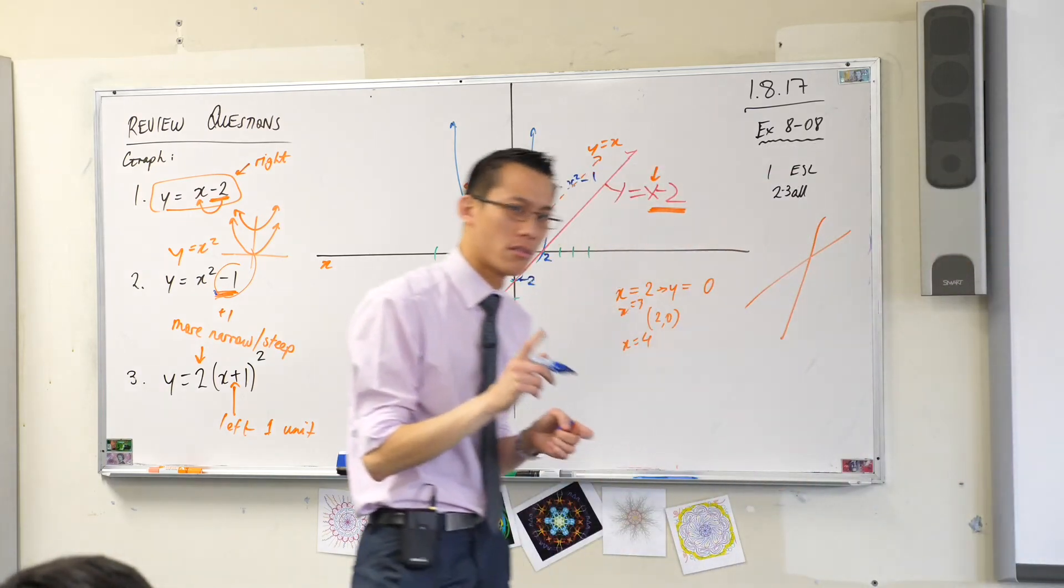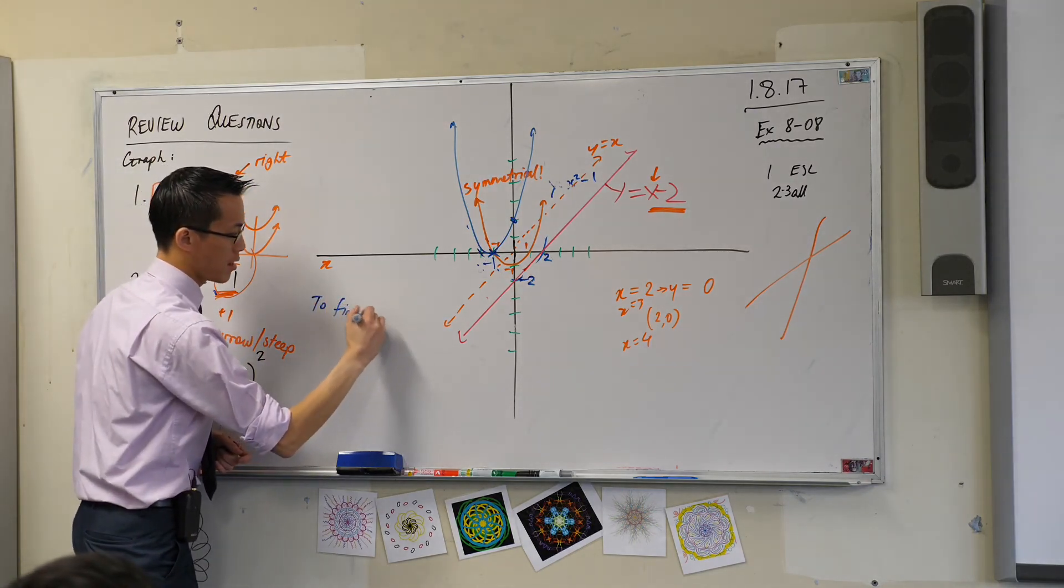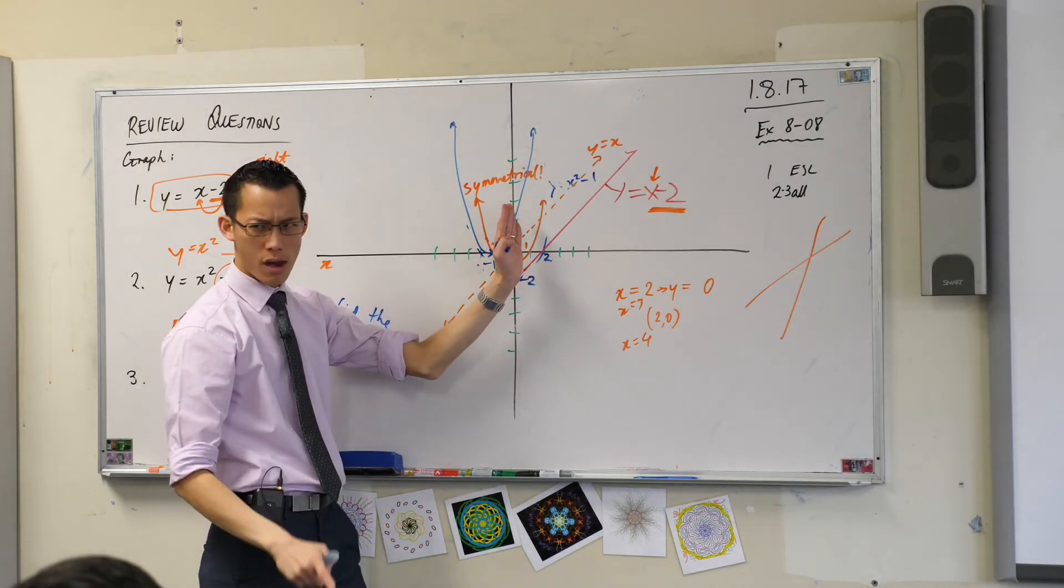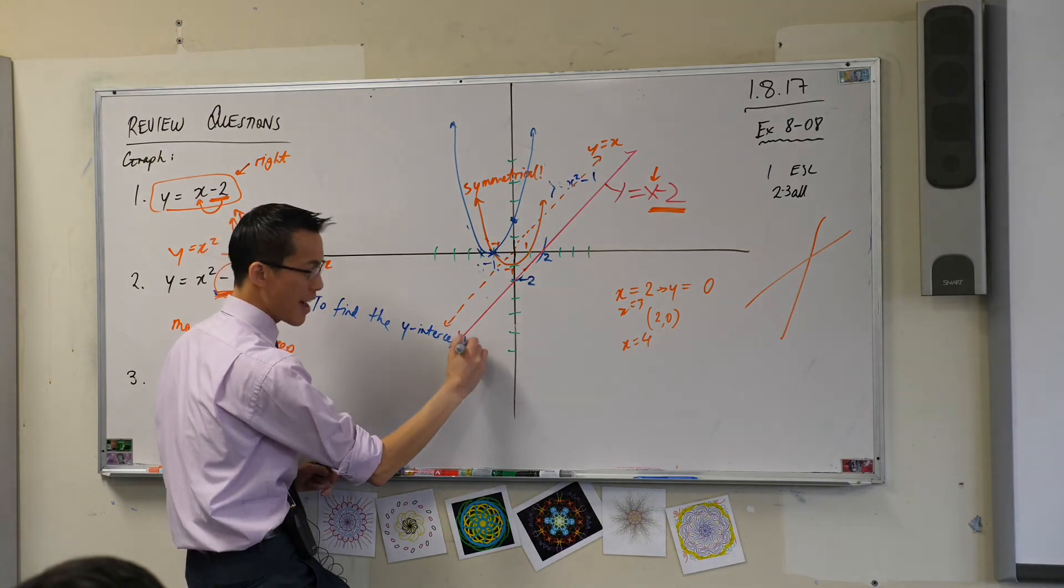To find the, this guy's the x-intercept because it's on the x-axis. So what's this guy called? The y-intercept. To find the y-intercept, you remember, let x equal 0.